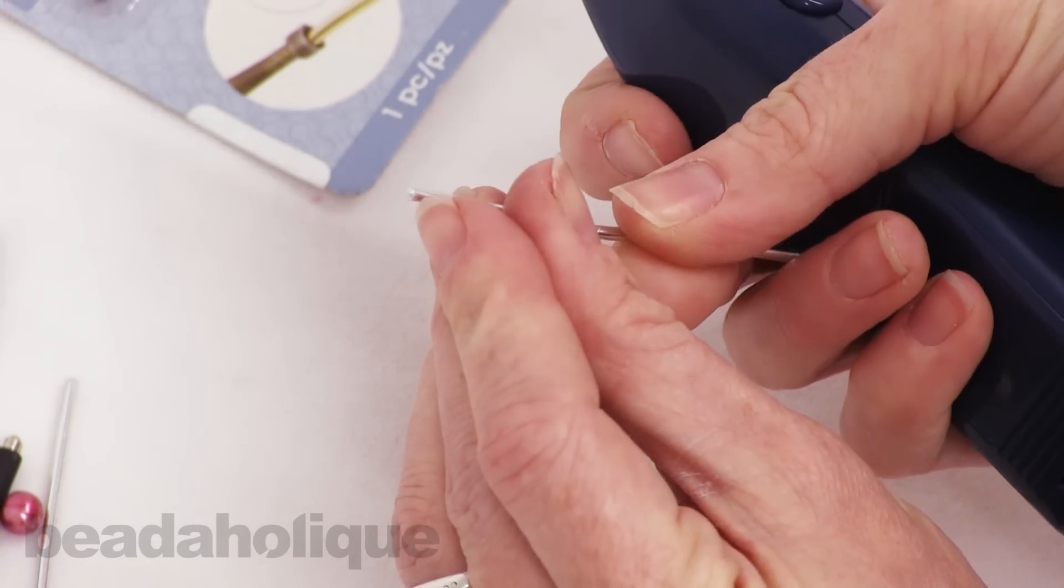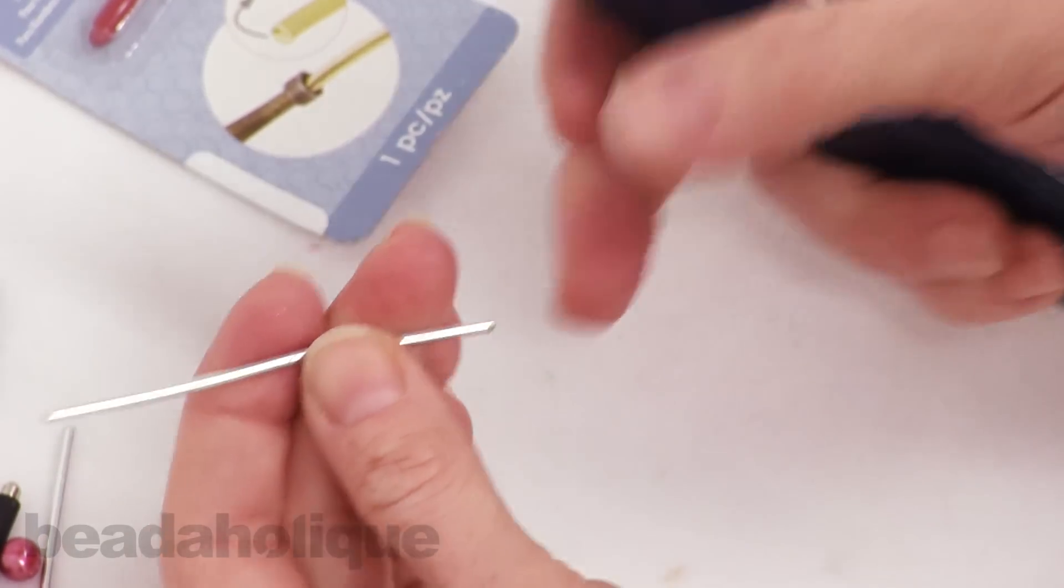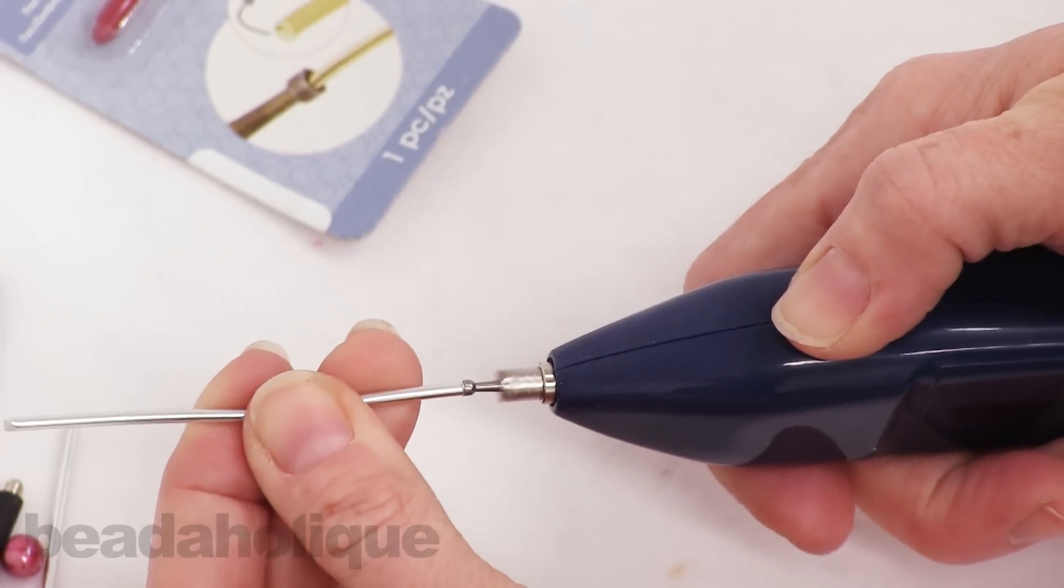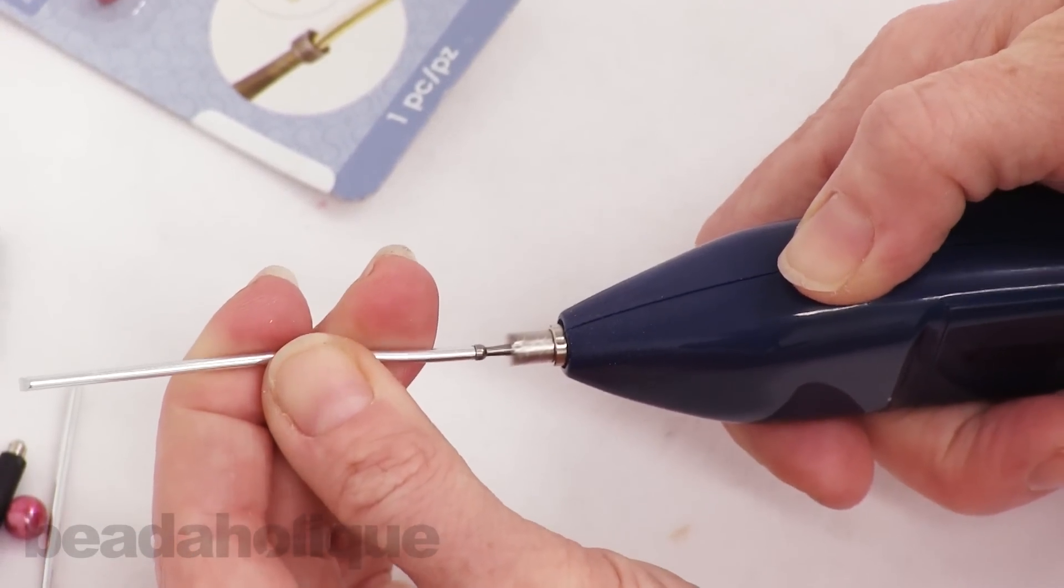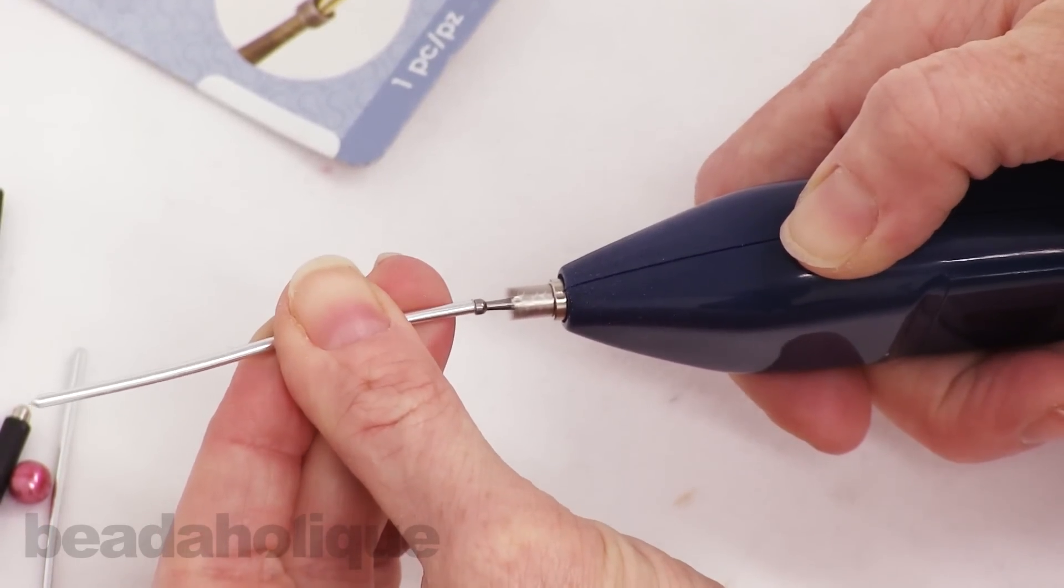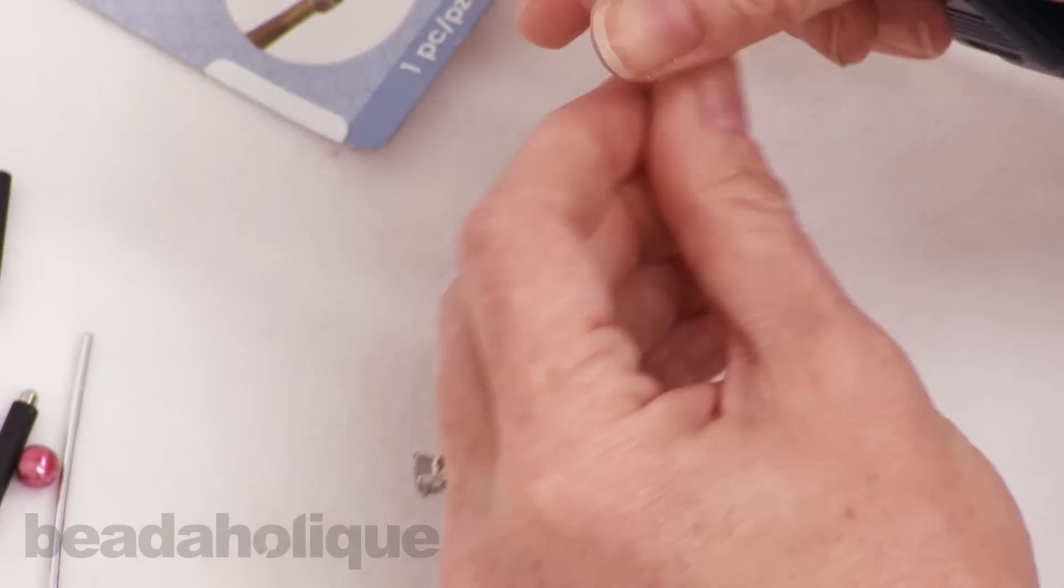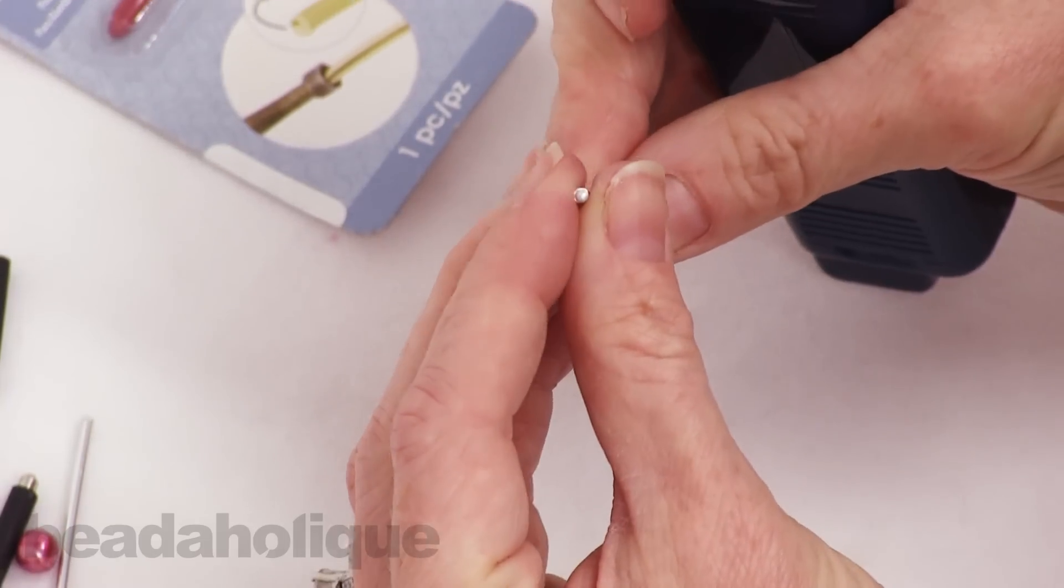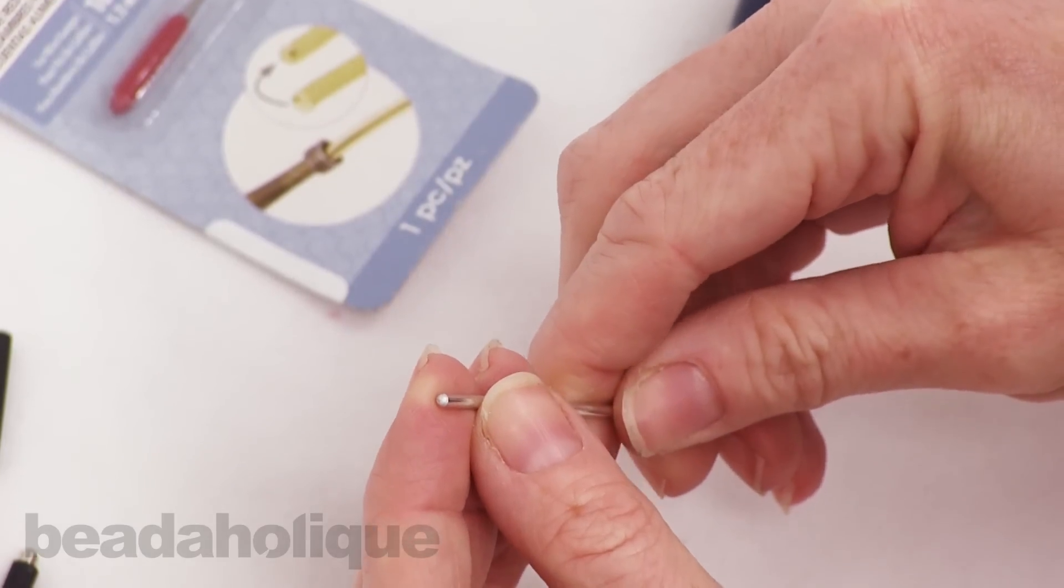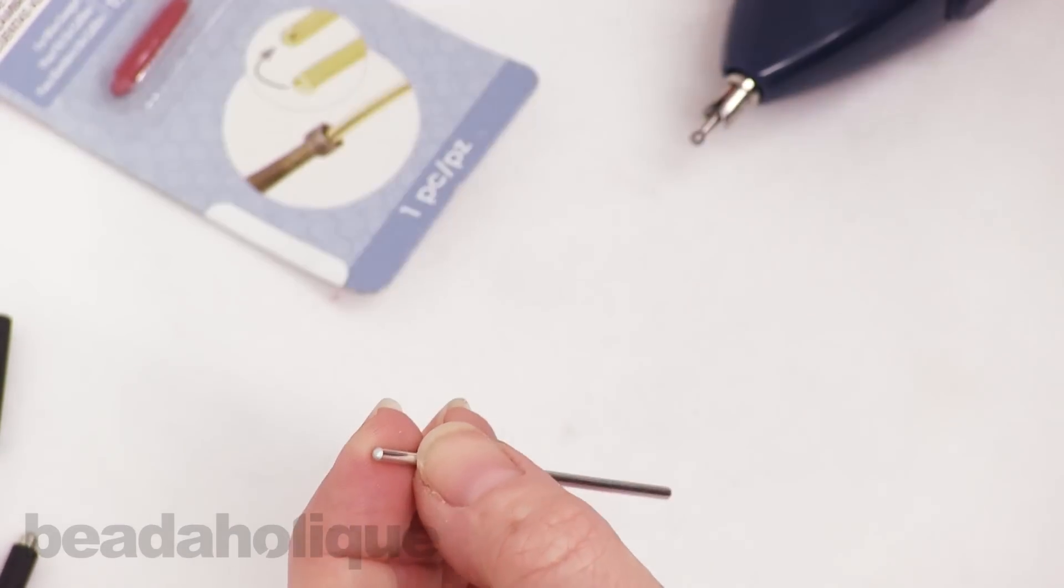You can see we are starting to get a nice rounded tip. It does have a little rough edge right here but as you continue to use your tool that will disappear. So you'll just continue like that and then as you work with it you will eventually end up with this where it's really nice and rounded.